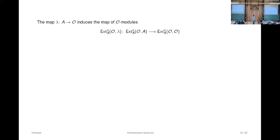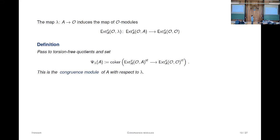Here's the starting point. The map A to O induces a map of O-modules. You have a map at the level of Ext going from Ext_OA to Ext_OO. These are both O-modules and you can look at the torsion-free quotients on either side. You look at the torsion-free parts of the source and target and look at the cokernel of this map—and this is what we call the congruence module of the ring A.